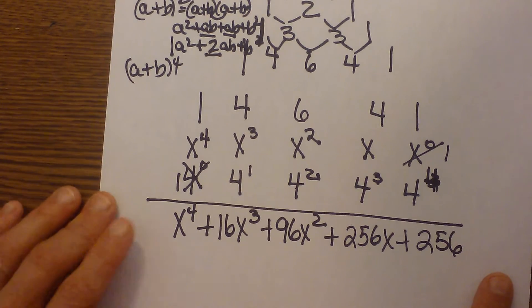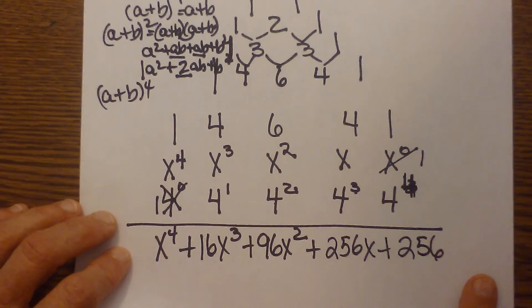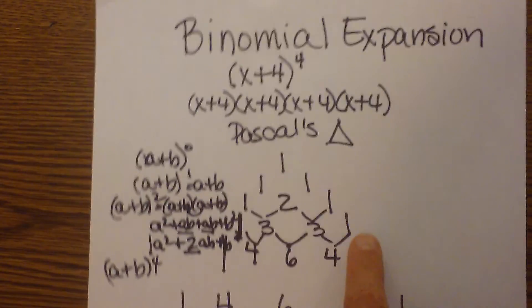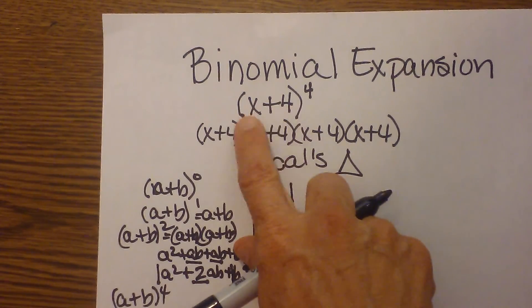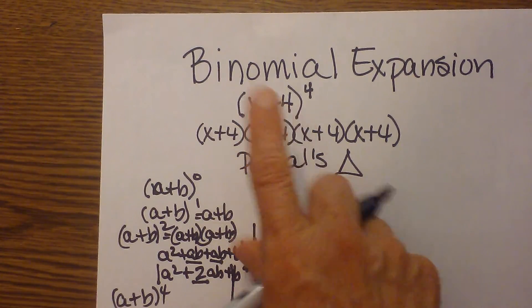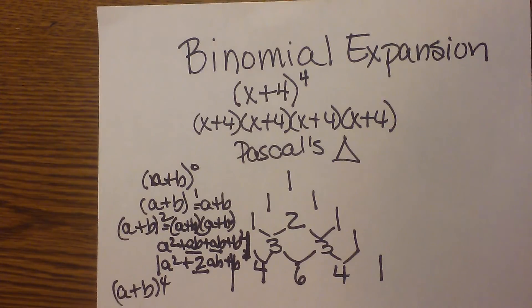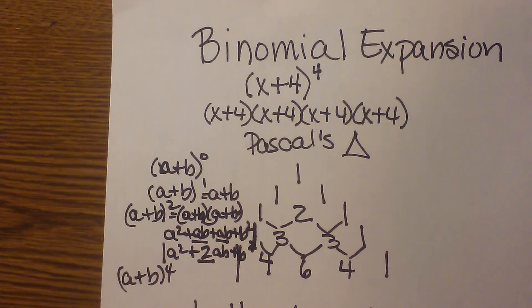That's my first example of expanding a binomial using Pascal's triangle. In another video, I'm going to do one that has a subtraction in the binomial, which changes the answer slightly. Check back for that other example.